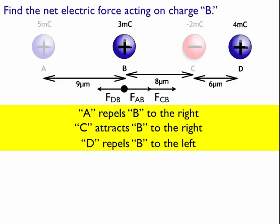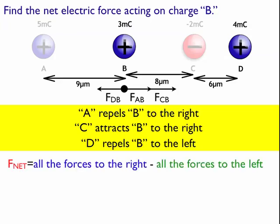So now I've essentially created my equation with my free body diagram. The net force is equal to all the forces going to the right, minus all the forces going to the left. So the net force is going to be FAB plus FCB minus the forces going to the left, which in this case is only one, FDB.